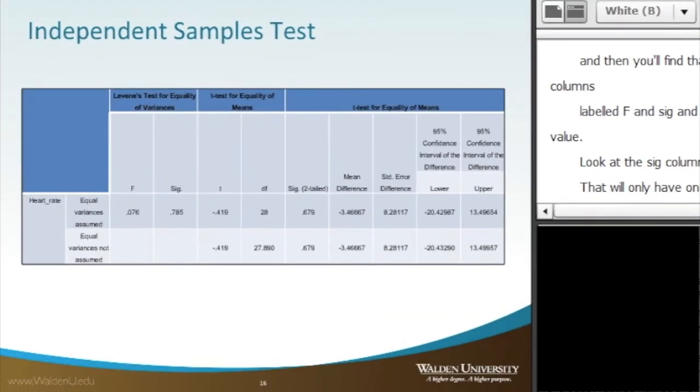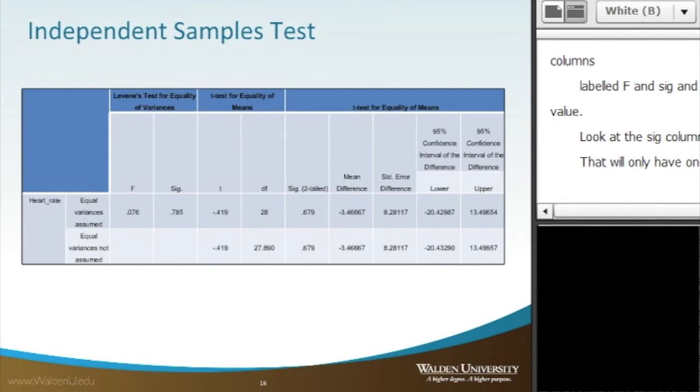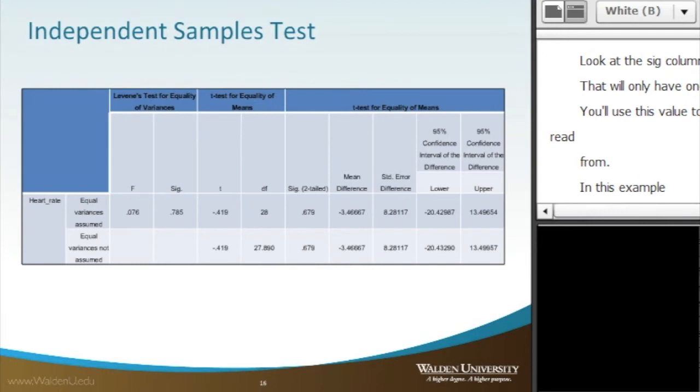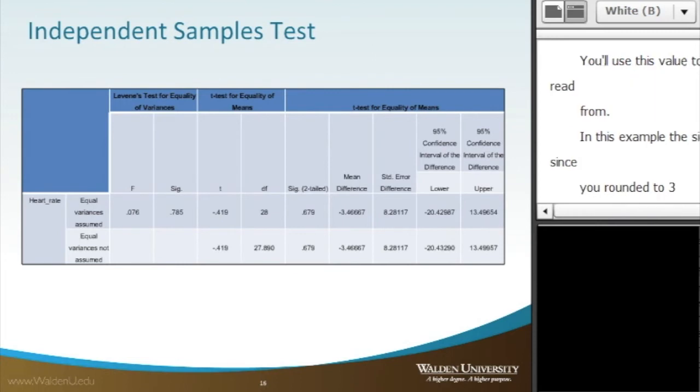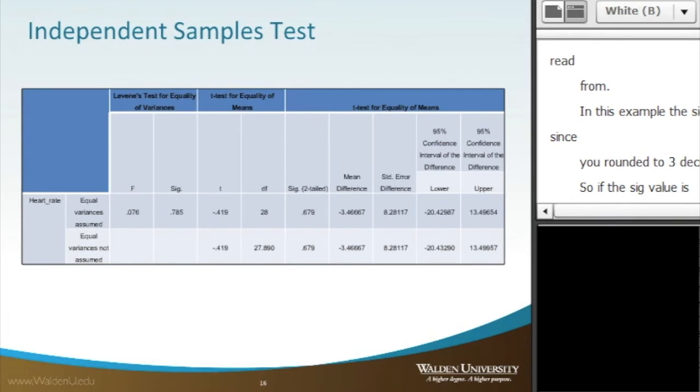You'll use this value to determine which row to read from. In this example, the SIG value column is .785 when rounded to three decimal places. So, if the SIG value is greater than .05, which we have here, then we read from the top row, that equal variances are assumed.